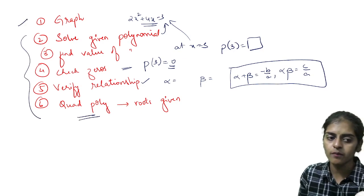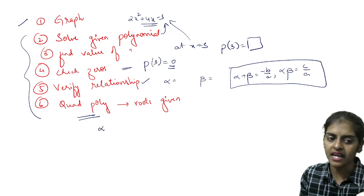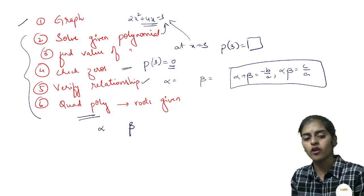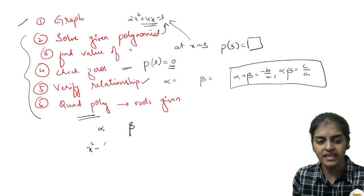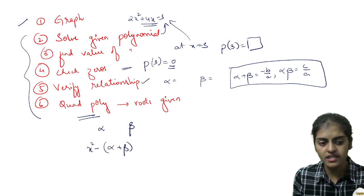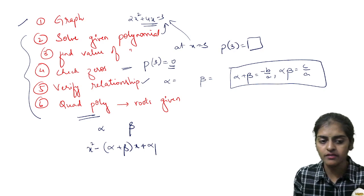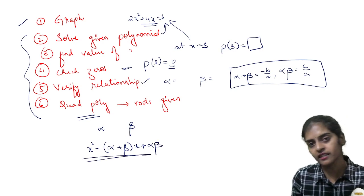You need to find the quadratic polynomial when roots are given. When alpha and beta are given, they will ask you to find the polynomial. It is x² minus sum of the roots into x plus product of the roots.